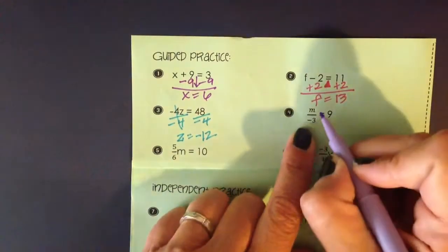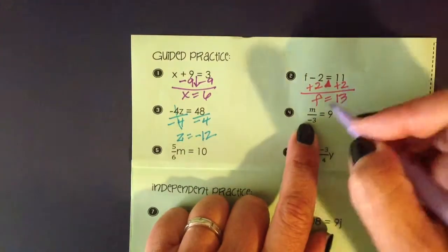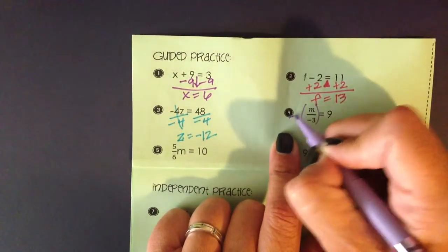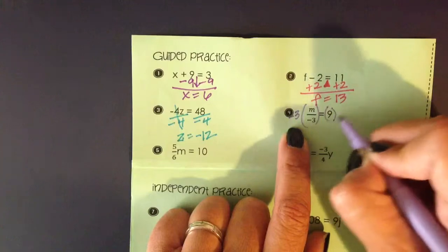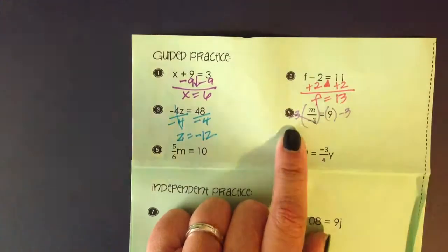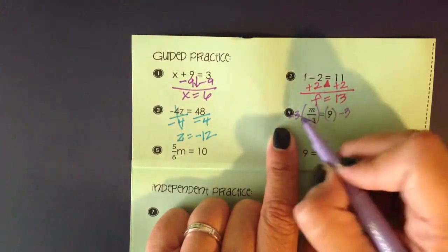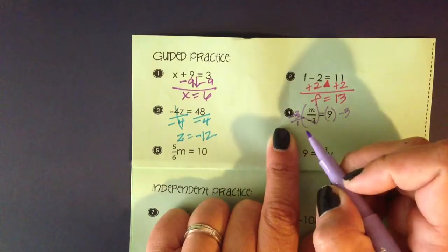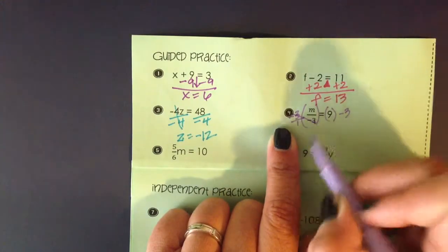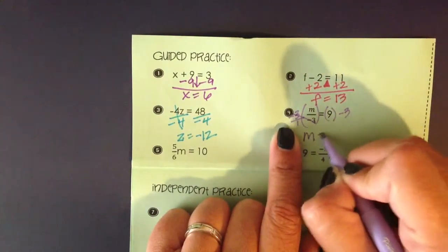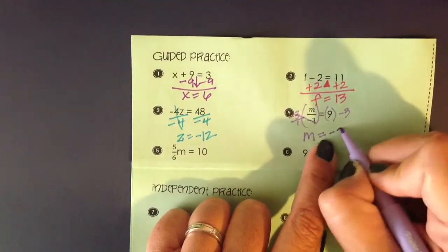In number 4, you see m divided by negative 3. I'm going to undo that by multiplying both sides by negative 3. If this is negative 3 over 1, I can divide out the negative 3 from the top and bottom. It leaves me with m equals 9 times negative 3 is negative 27.